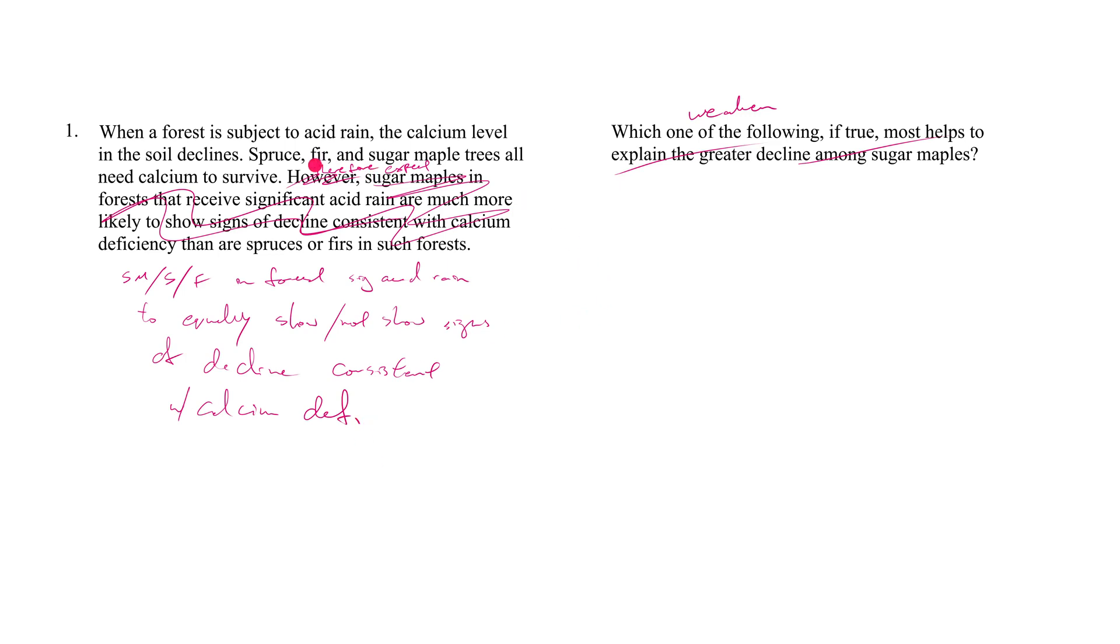Right, so because we know that spruce, fir, sugar maple all need calcium to survive—and this is our premise set—we make this conclusion that, well, they all need calcium to survive, then those three trees are going to show roughly the same signs of decline or not decline when they are in a forest that received a lot of acid rain.